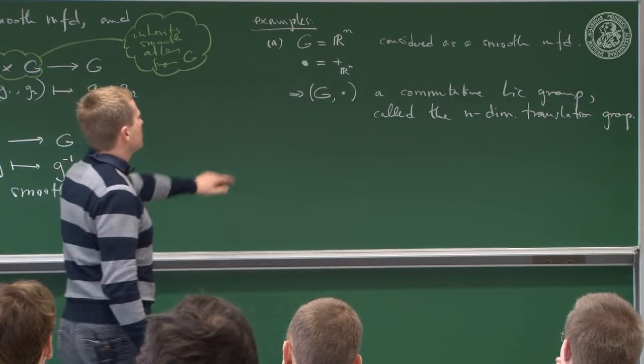First definition. Let (G, blob) be a Lie group. Something very simple is the so-called left translation. For any g in G, there is a map L_g from G to G, called the left translation with respect to g, defined by L_g(h) = g blob h.